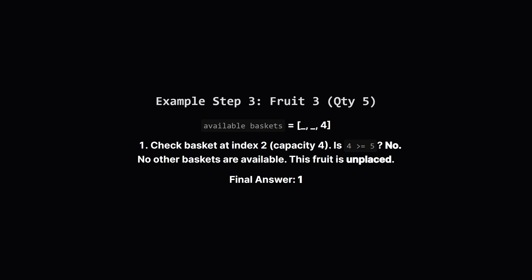Our final fruit type has a quantity of 5. There's only one basket left, the third one, with a capacity of 4. Is 4 big enough to hold 5? It's not. Since there are no other options, this fruit type has nowhere to go — it remains unplaced. In the end, we had just one unplaced fruit type, so our answer is 1.